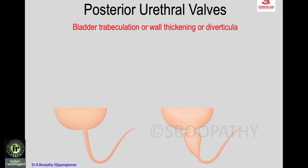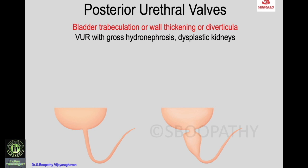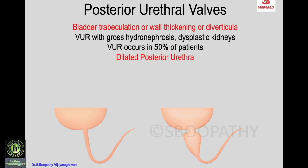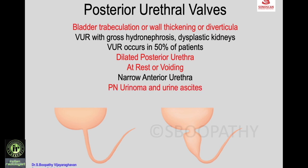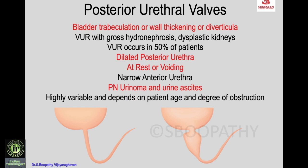On ultrasound, posterior urethral valves show bladder trabeculation, wall thickening, or diverticula. There may be vesicoureteric reflux with gross hydronephrosis and dysplastic kidneys, occurring in about 50 percent of patients. A dilated posterior urethra is seen at rest or during voiding with a narrow anterior urethra. Perinephric urinoma or urinary ascites may occur as complications due to breach of the urinary bladder or calyx.